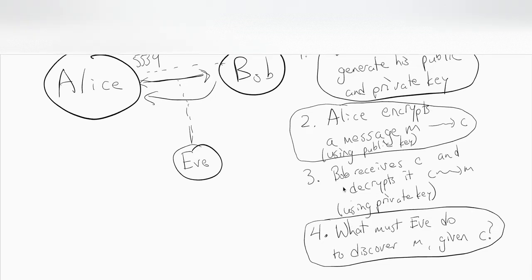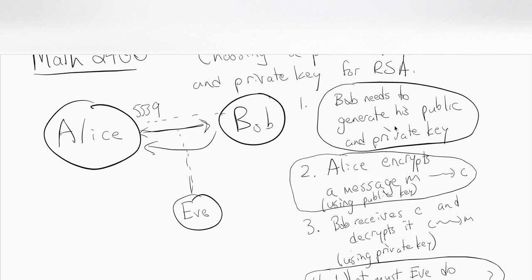This video is about the public and private key. Bob generates a public key and a private key. The public key he announces to everyone. Anyone can have his public key. His private key he keeps secret, so he memorizes it or keeps it written somewhere, obviously not on a post-it note on his computer, but he has some way of finding it where only he knows what it is.